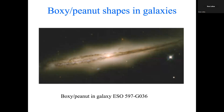First of all, we observe that there are some central parts of galaxies or bars that have these boxy peanut shapes, as you can see in this picture. One example is a galaxy with a very pronounced, beautiful example of this shape. The idea is to try to understand what is happening that produces this kind of shape.